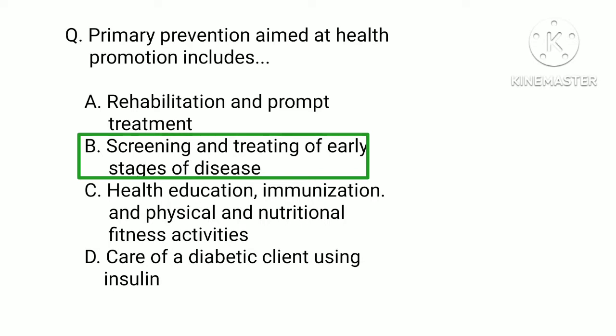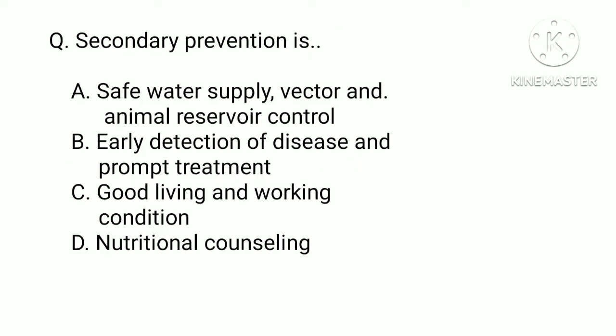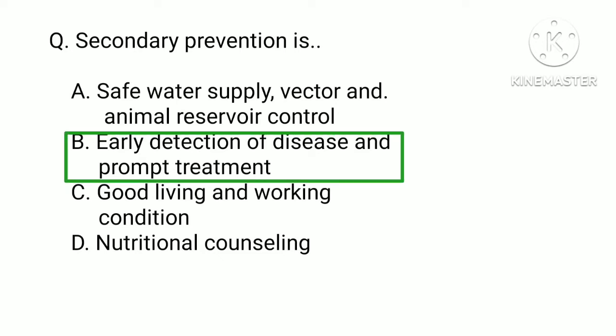Primary prevention aims to prevent disease or injury before it occurs. Secondary prevention includes: a) safe water supply, vector and animal reservoir control, b) early detection of disease and prompt treatment, c) good living and working conditions, or d) nutritional counseling. The correct answer is b) early detection of disease and prompt treatment.